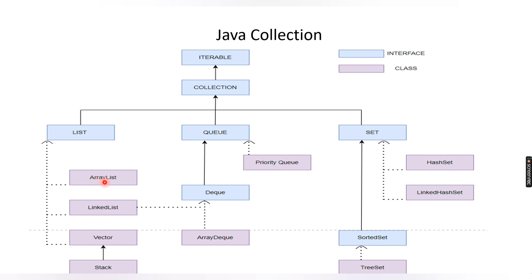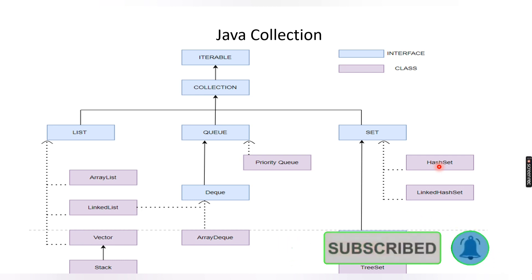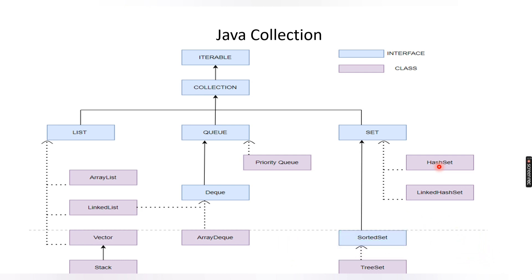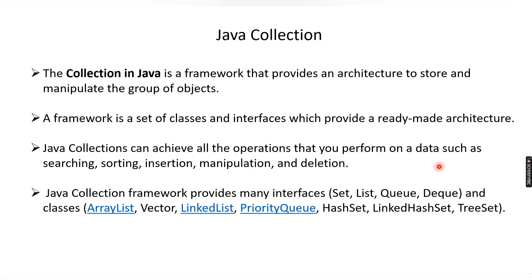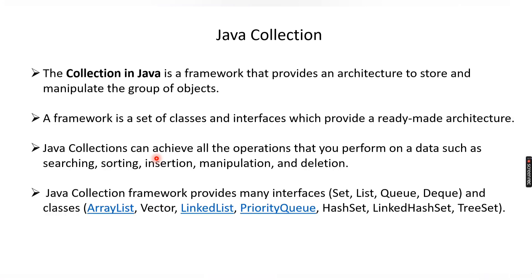There are specific properties related to these classes. For example, ArrayList can contain duplicate elements, but HashSet cannot contain duplicate elements. That is just an overview of ArrayList and HashSet — we will learn the details in upcoming videos. To summarize: collection is a framework used to store and manipulate a group of objects, and a framework is a set of classes and interfaces providing a ready-made architecture.